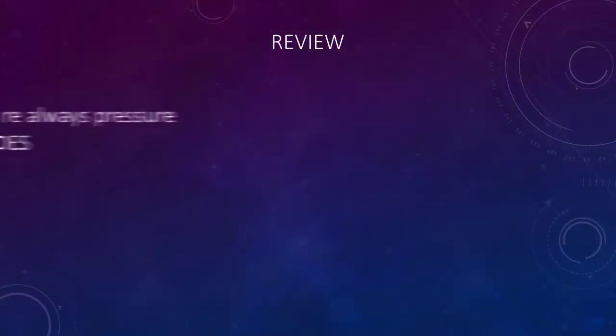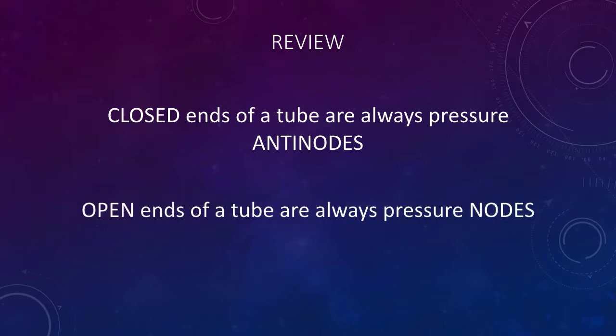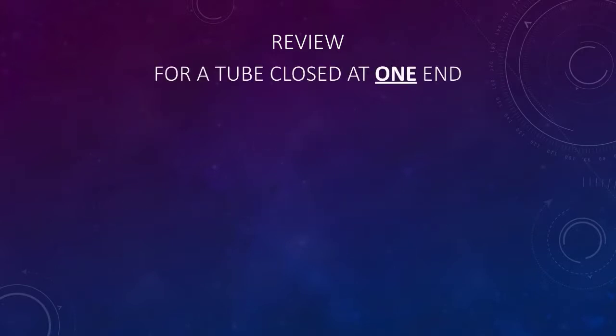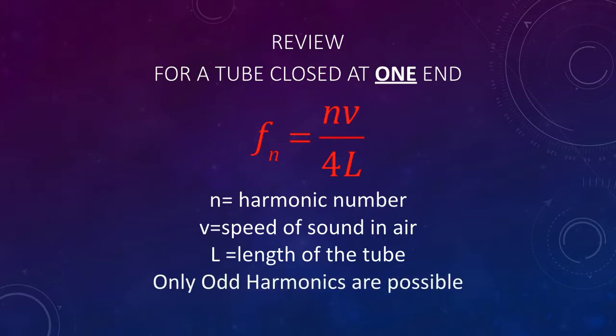To review, closed ends of a tube are always pressure anti-nodes. Open ends of a tube are always pressure nodes. For a tube closed at one end, the frequency of any harmonic is nv over 4l, where n is the harmonic number, v is the speed of sound in air, and l is the length of the tube. Only odd harmonics are possible.